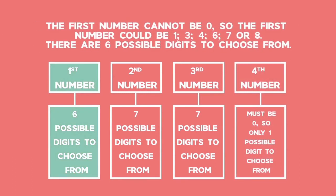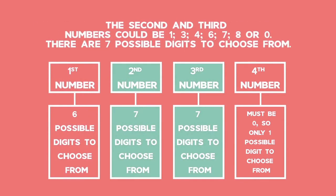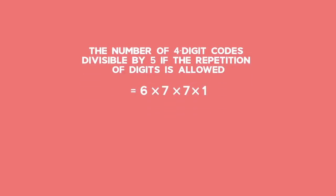The first number cannot be 0, so the first number could be 1, 3, 4, 6, 7 or 8 — there are 6 possible digits to choose from. The second and third numbers could be 1, 3, 4, 6, 7, 8 or 0 — there are 7 possible digits to choose from. The total number of four-digit codes divisible by 5 if repetition is allowed equals 6 times 7 times 7 times 1, which equals 294.